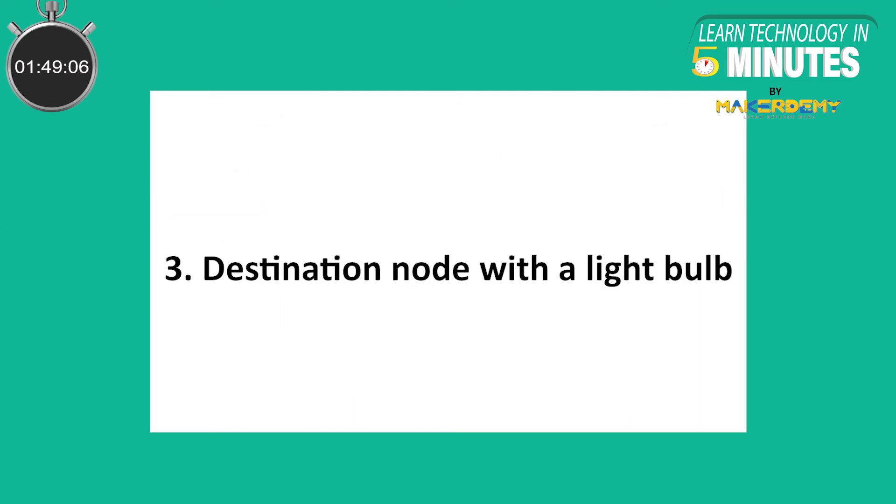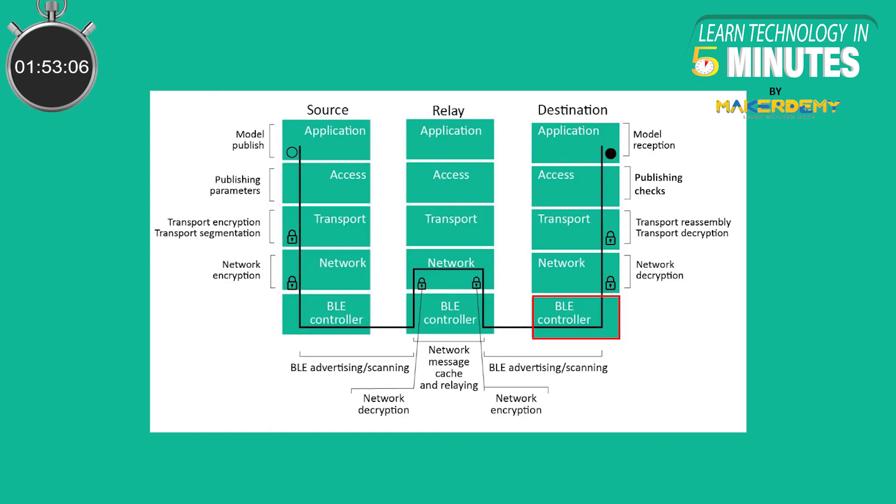Destination node with the light bulb. Once the packet is relayed to the destination light bulb node, its network layer will decrypt the packet and pass it to the transport layer.